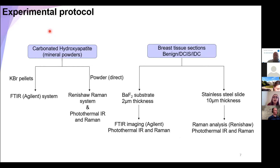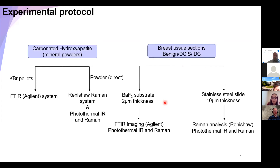This is my experimental protocol. We don't have any database of spectral features for microcalcification with the Mirage system — we need to create it. So I started with two kinds of samples: mineral powders used as standards, which have a similar composition to the calcification in the tissue — made of hydroxyapatite with different ranges of carbonate substitution in the lattice. I also used different breast tissue sections with different substrates, and I compared everything across the FTIR imaging system, the Raman system, and the Mirage system.